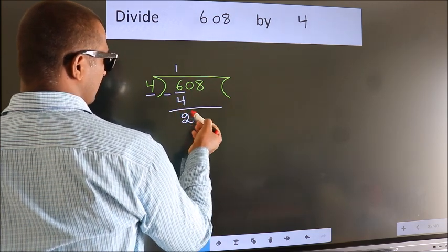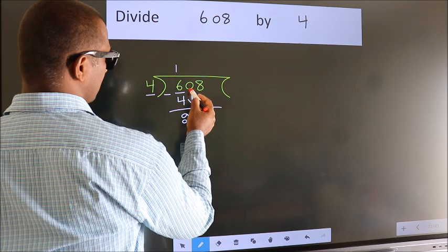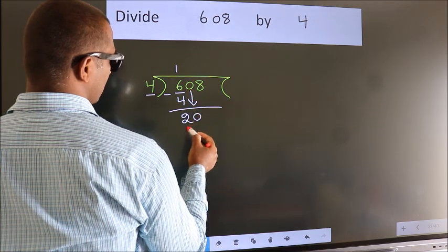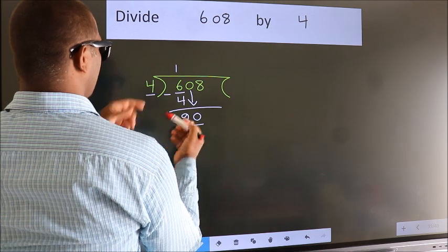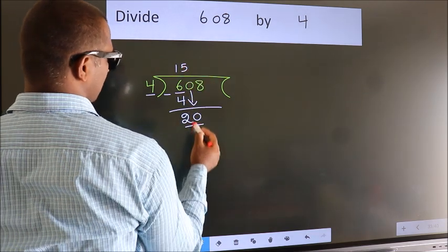After this, bring down the beside number. So, 0 down. So, 20. When do we get 20? In the 4 table, 4 fives, 20.